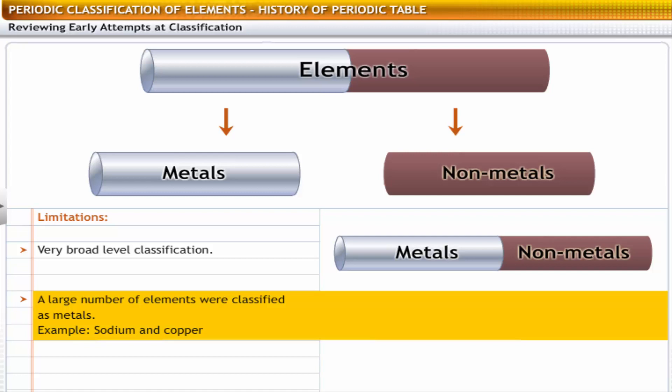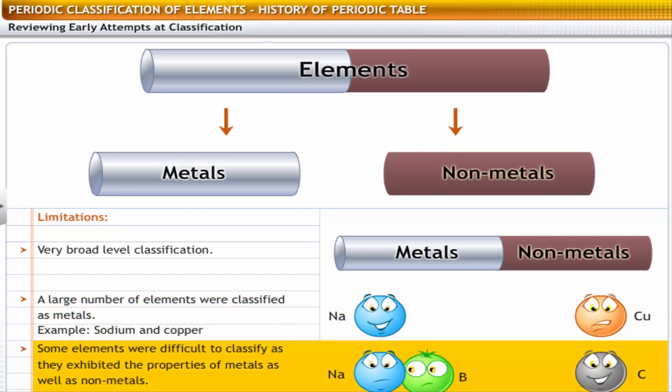However, they did not necessarily display similar chemical properties. For example, sodium and copper were both characterized as metals, but their chemical properties are very different. Some elements such as boron exhibited the properties of both metals as well as non-metals. It was difficult to determine how to classify such elements.